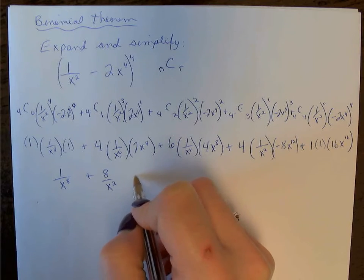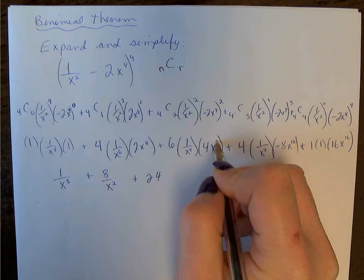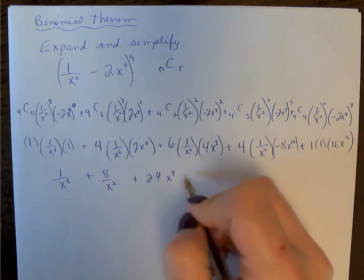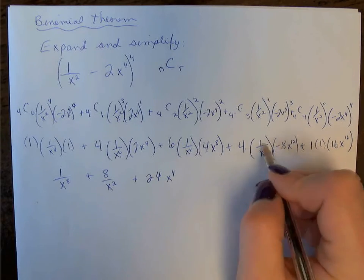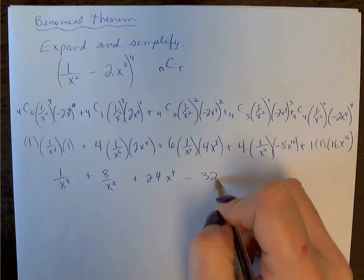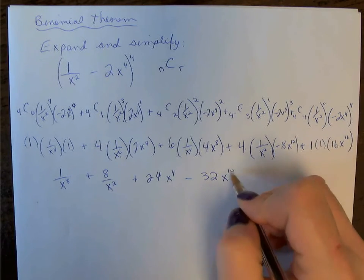plus 6 times 4, so 24x to the 8 divided by x to the 4, so you're going to subtract your exponents. 4 times 1 times -8, so you're going to get -32, x to the 12 divided by x squared, so subtract your exponents again,